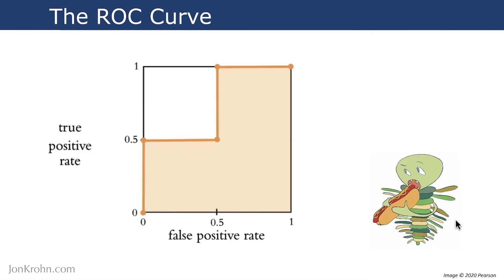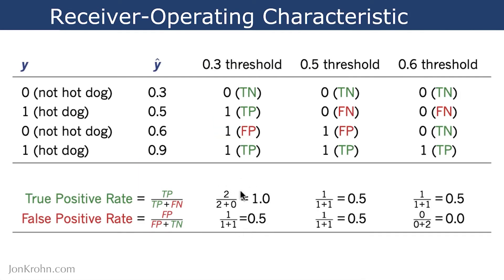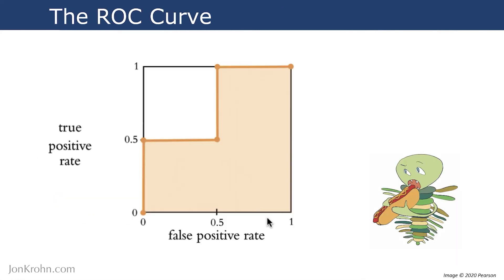So then what we do with each of those values is we plot them on a curve. So we take the true positive rates and the false positive rates from this table, and we consider them to be a coordinate. So we have a coordinate of TPR 1.0 and FPR 0.5. And we can take that and put that on our curve. So TPR of 1.0 and FPR 0.5 corresponds to this point here.